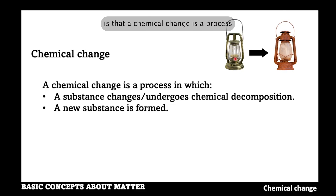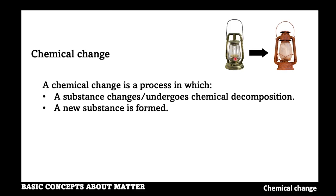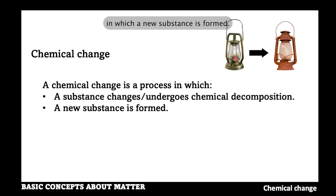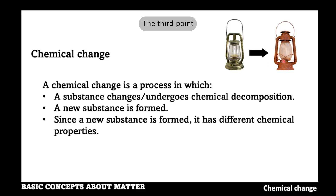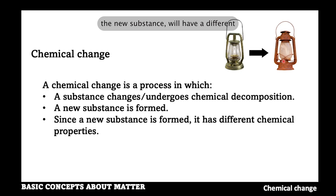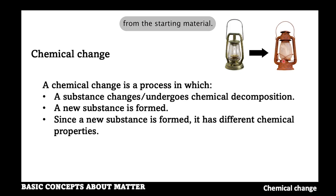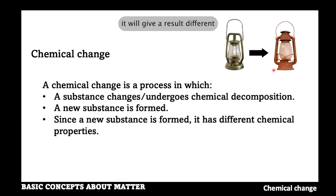Another point is that a chemical change is a process in which a new substance is formed — in this case, rust. The third point is that since a new substance is formed, it will have different chemical properties from the starting material. When the new substance is tested with a chemical reagent, it will give a result different from that of the starting material.